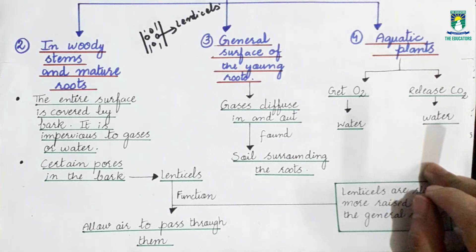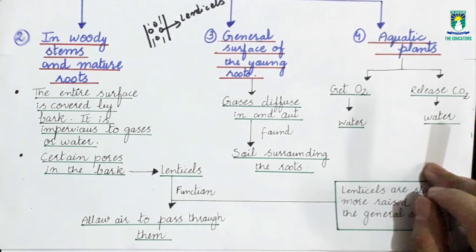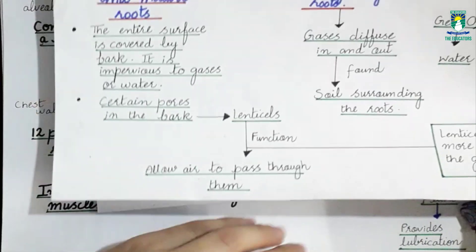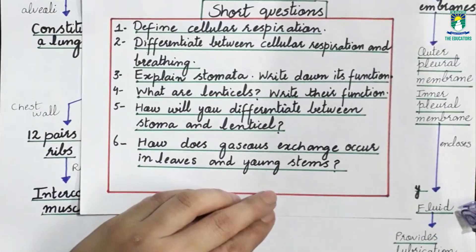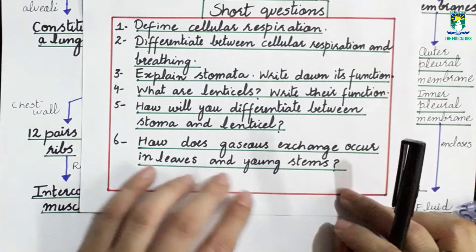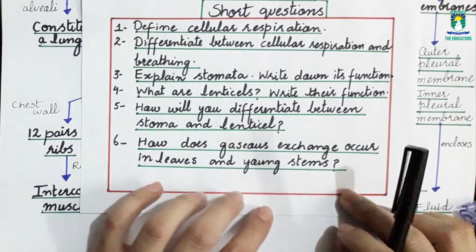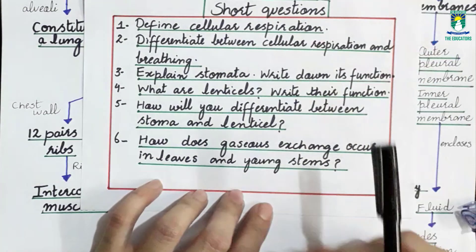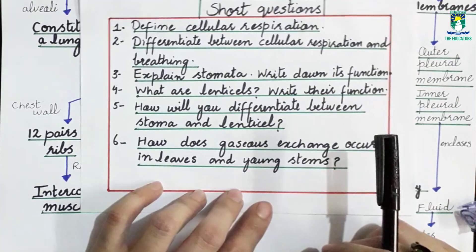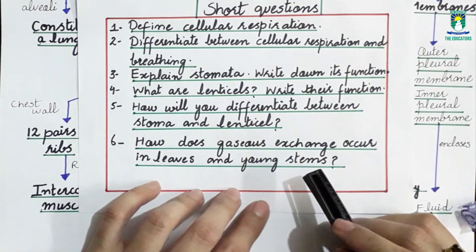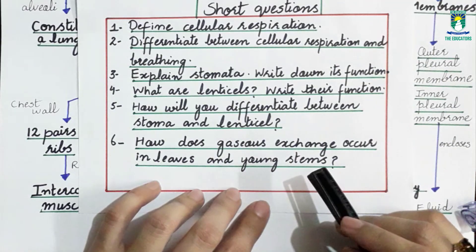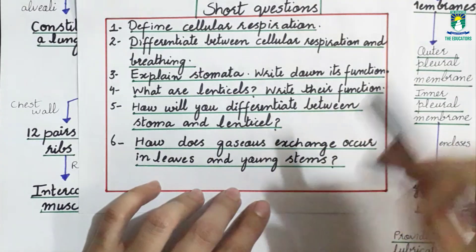We have now discussed the different types of structures which help in gaseous exchange in plants. At the end, here are some short questions regarding the introduction and gaseous exchange in plants.